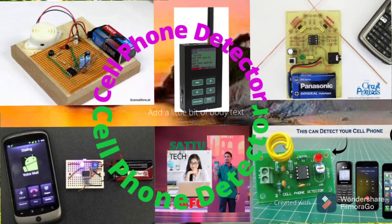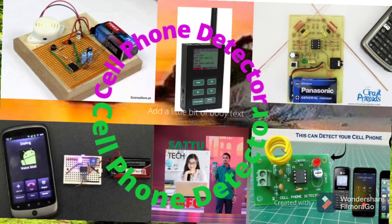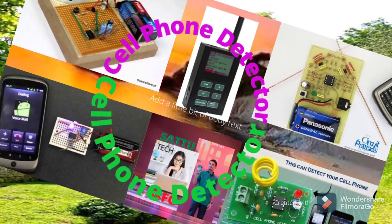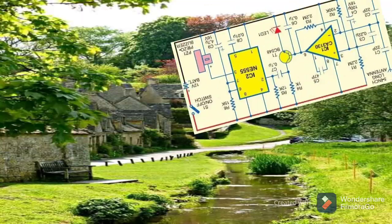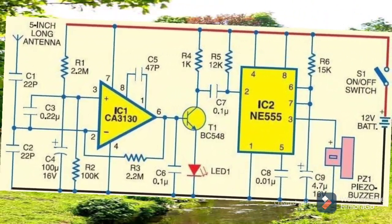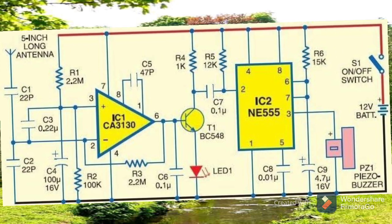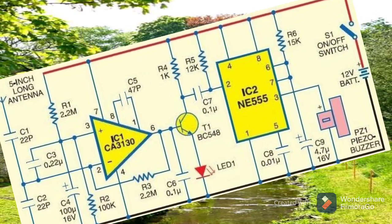Cell phone detector circuit. The normal amplitude modulation and frequency modulation bands are in MHz frequency, so we are able to detect using a normal LC circuit. But in case of cell phone frequency, it lies between 0.9 to 3 GHz.